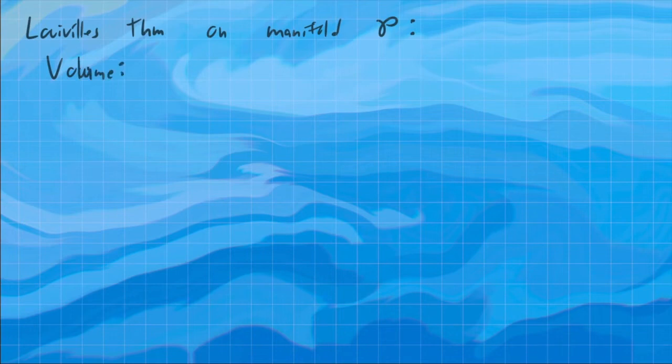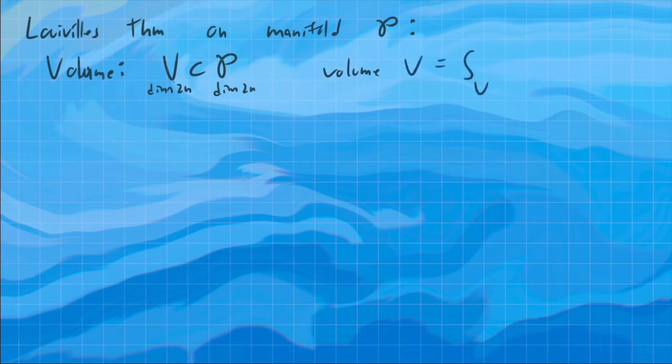Remember, so a volume is basically, if we have our phase space P, and we consider some sub-manifold, some sub-volume V sitting inside P, where P is dimension 2n and V is also dimension 2n, we want to measure the volume of V. That's something that we integrate over. We integrate some sort of thing over V. So volume V is the integral over V of something. What do we put here? Well, we have to put a 2n form, right? Because that's the dimension of the thing we're integrating over. So this is called a volume form. Something is a volume form if it's a 2n form, where 2n is the dimension of the manifold. It's a differential form of maximal dimension such that it's never vanishing, never zero at any given point.